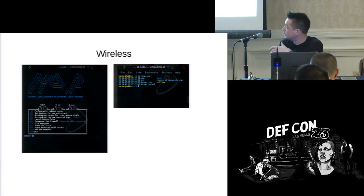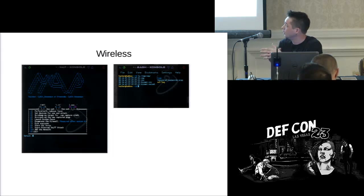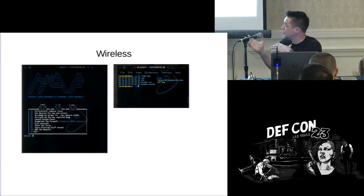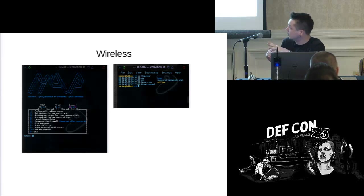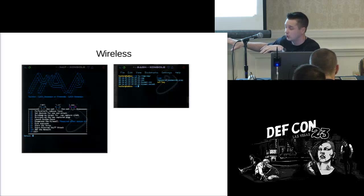We can de-auth everyone right from here, start SSL strip at any time, start Ettercap at any time, and ARP the network at any time. All these functions utilize the adapters we have predefined. That's an overview of what the interface is going to look like when you initially start N4P and what to expect.